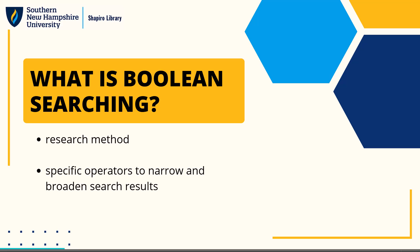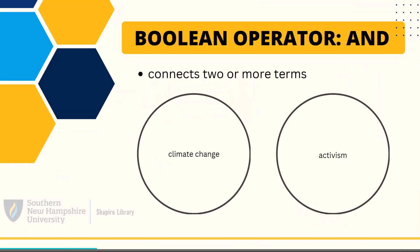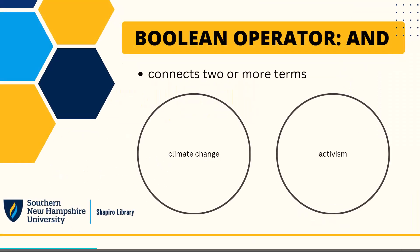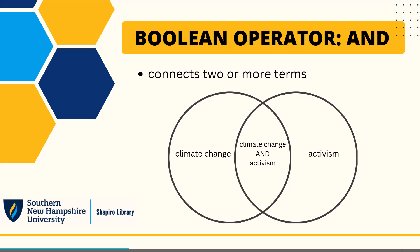The boolean operator AND tells a search engine that you want to find information about two or more search terms. For example, if I'm interested in climate change activism, I can connect the two separate terms with AND: 'climate change AND activism.' This will narrow down your search results because the search engine will only bring back results that include both search terms.